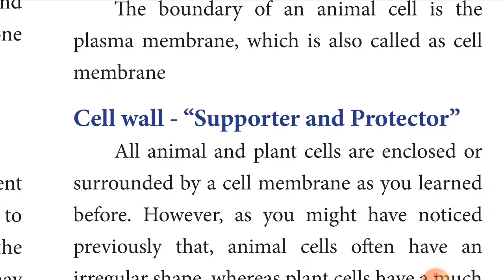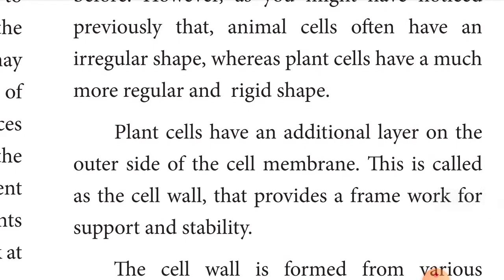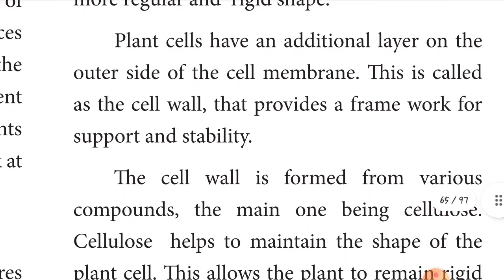The cell wall supports and protects both plant and animal cells. All animal and plant cells are enclosed or surrounded by the cell membrane. However, animal cells often have an irregular shape, whereas plant cells have a much more regular and rigid shape. So animal cells have a non-rigid, irregular shape, while plant cells have a regular and rigid shape.